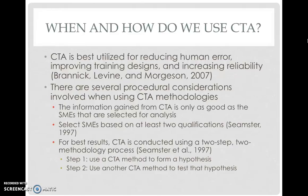CTA is best utilized for reducing human error, improving training designs, and increasing reliability. These are the main purposes for conducting a cognitive task analysis. There are several procedural considerations to keep in mind: the information gained from CTA is only as good as the SMEs selected for analysis. To ensure you are selecting high-quality SMEs, one should select them based on at least two qualifications — such as time spent with the organization, awards and accolades, suggestions from a supervisor, or education requirements — whatever ensures that your experts are high-quality and can give high-quality insight.